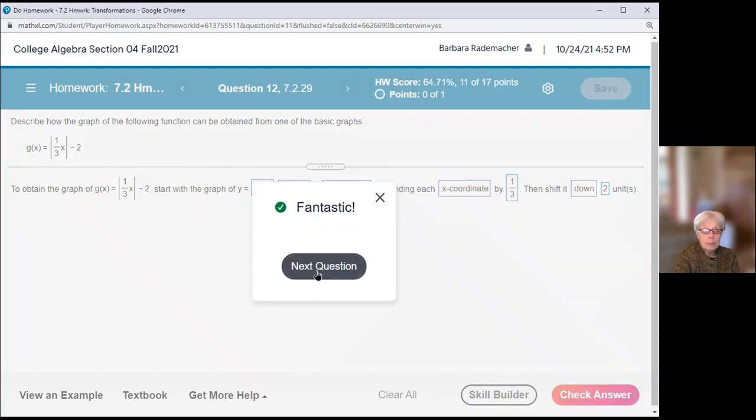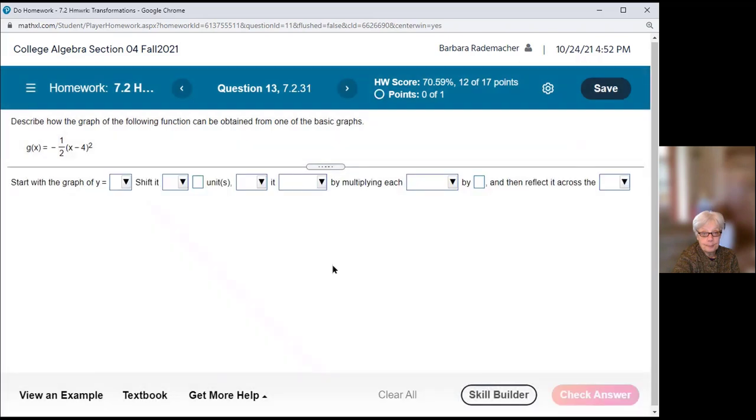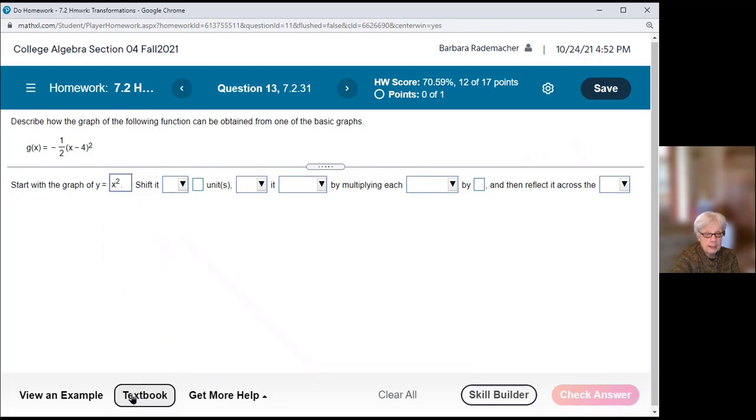OK, remember you can backtrack this. Here we have a transformation of x squared. OK, that's our basic function. Start with the graph of y equals x squared. Now, it's talking about a shift. The only kind of shift, see the word shift it? Shift it, it's going to be down 4 units.